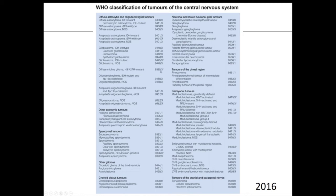Another special subtype is the diffuse midline glioma defined by the H3K27M mutation. This is a relatively recent discovery in the last five to seven years. This population of tumors is, by definition, a midline tumor — something in the thalamus or brainstem. Ependymal tumors also fall under the umbrella of gliomas; these arise from the ependyma. The most malignant are anaplastic ependymomas, but there are also grade one benign variants like subependymomas.